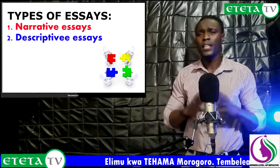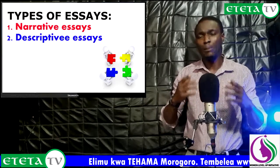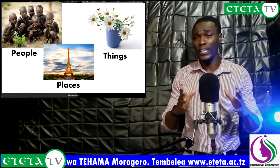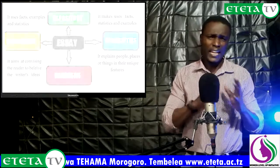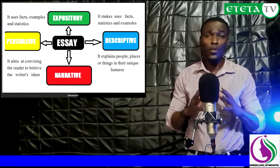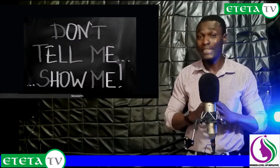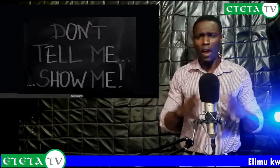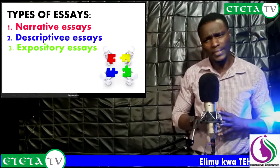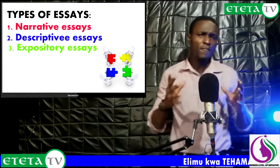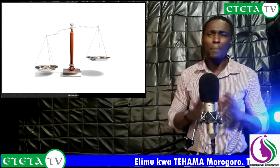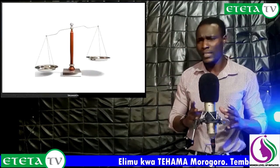The second type of essay is descriptive essays. These are sometimes called 'painting writing.' They explain or describe persons, places, or things. Unlike narrative essays, in descriptive essays the author should show and not tell. Next are expository essays — an informative piece of writing that presents a balanced analysis of a certain topic.